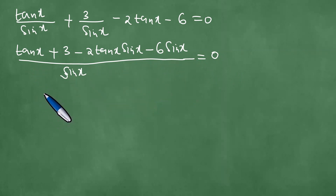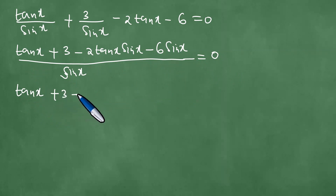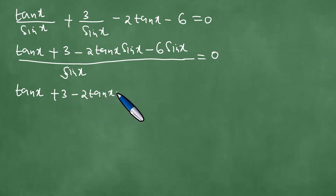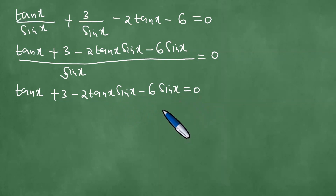Upon further cross multiplication, we achieve: tangent of x plus 3 minus 2 tangent of x times sine x minus 6 sine x equals 0.